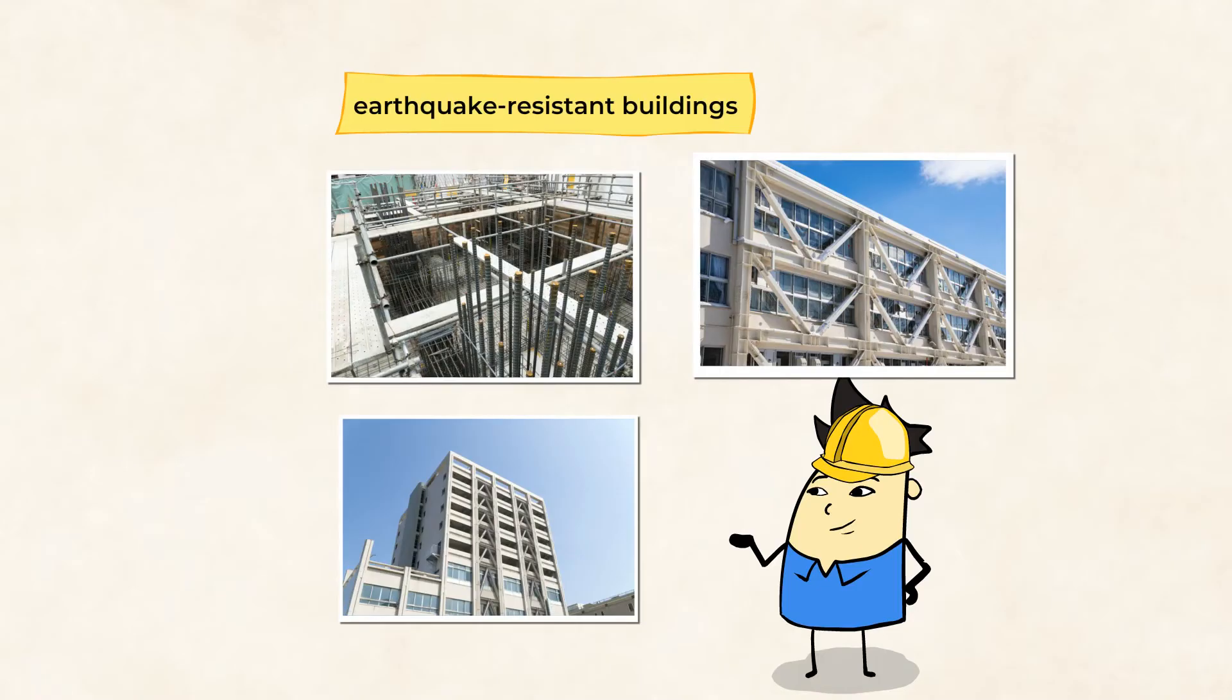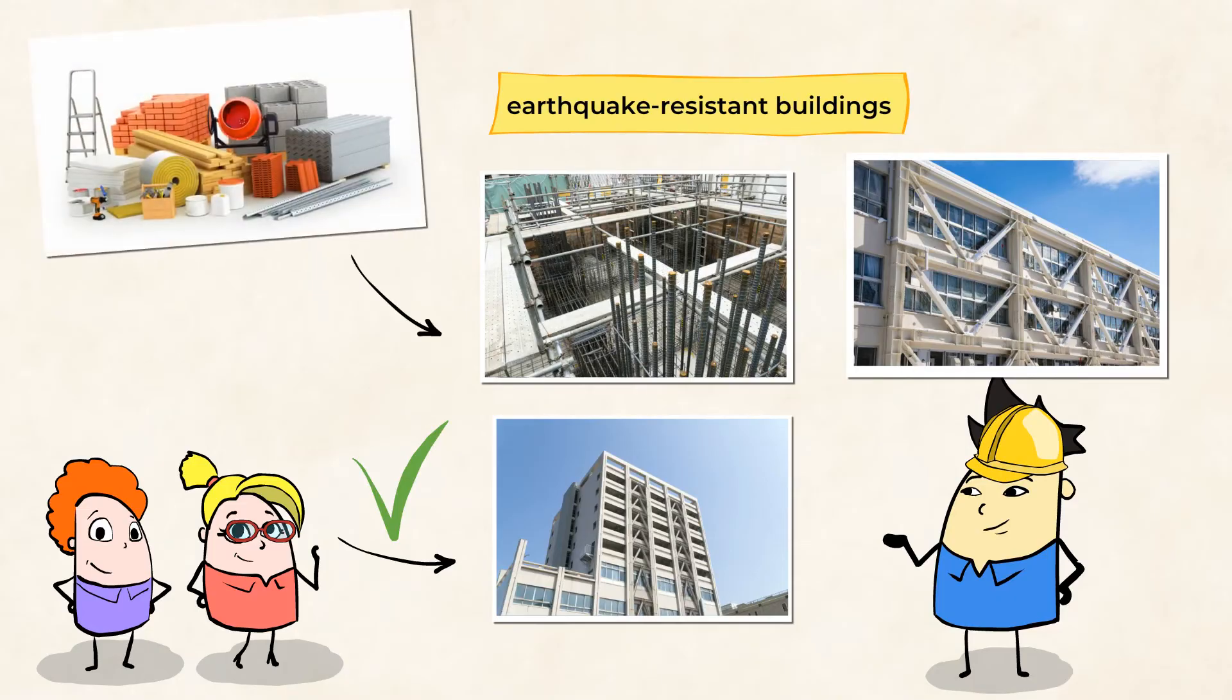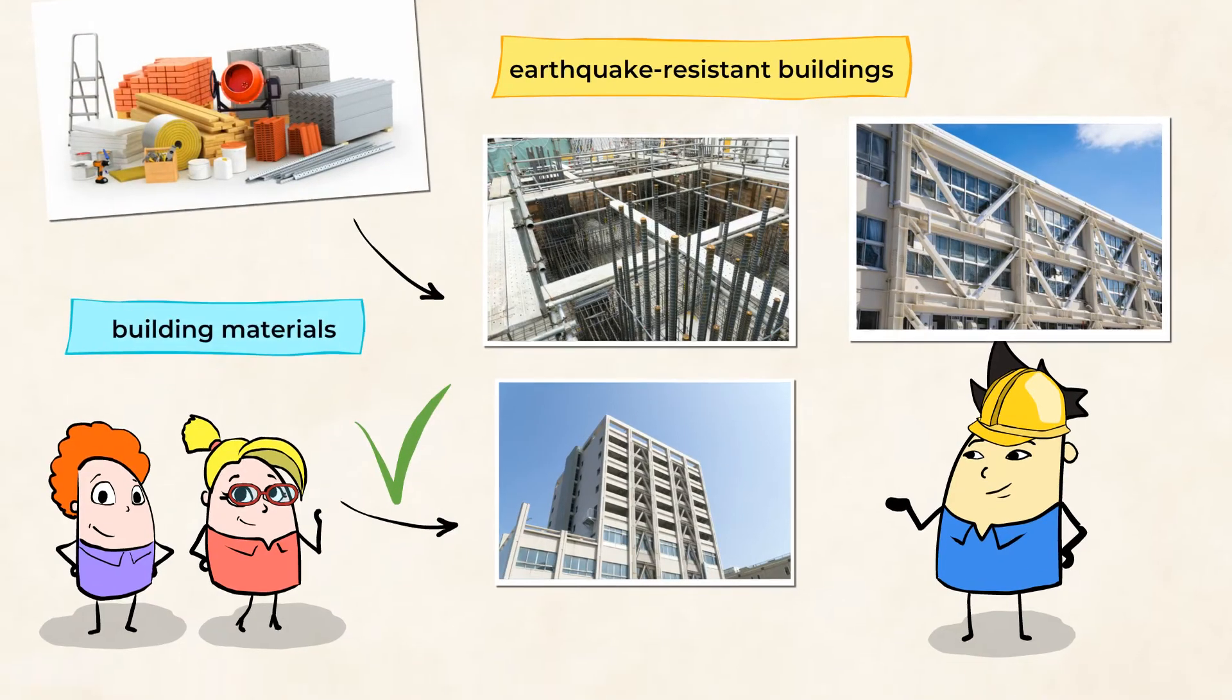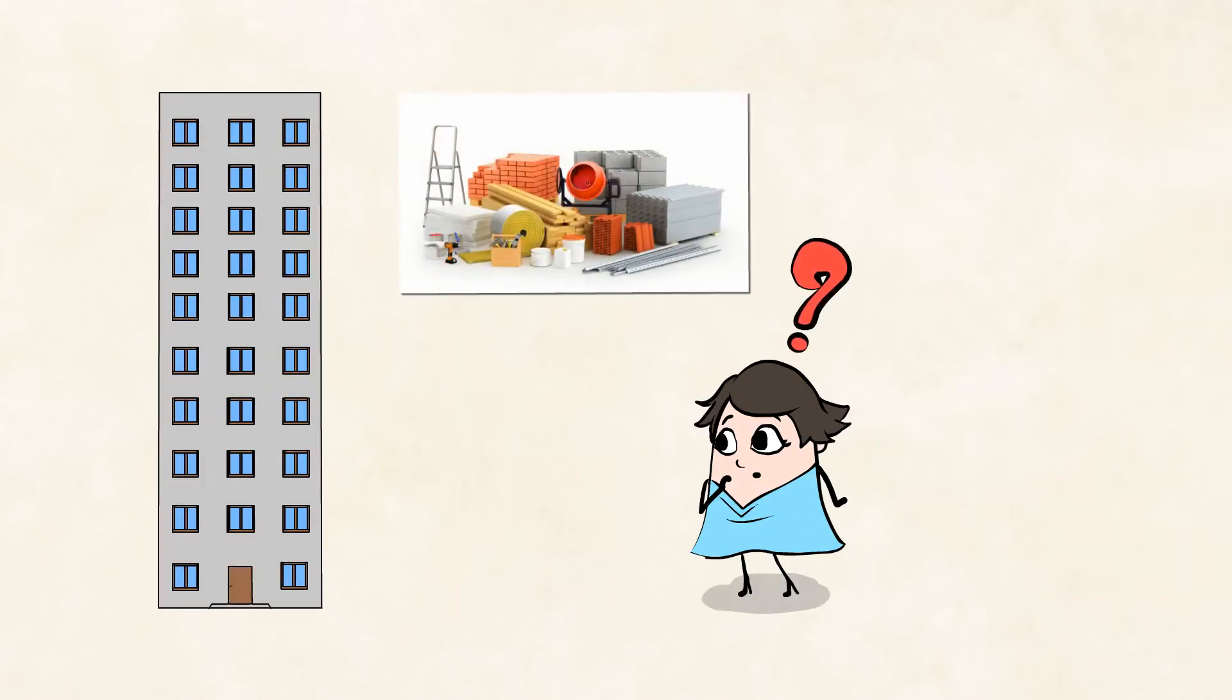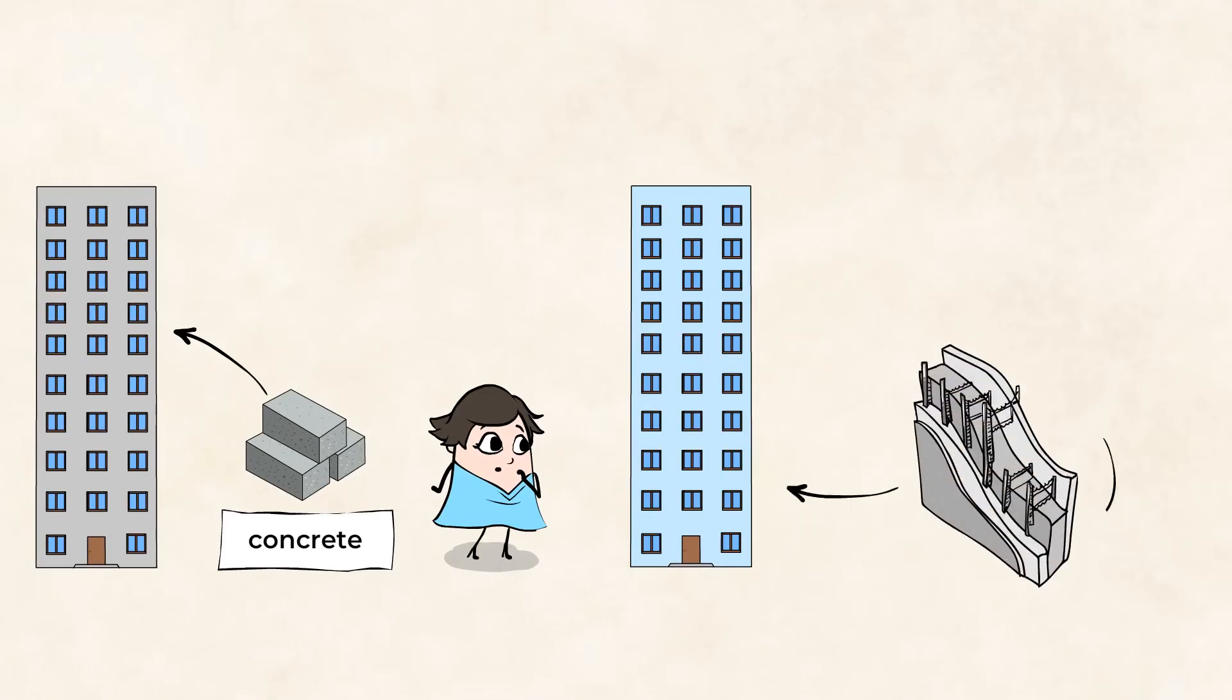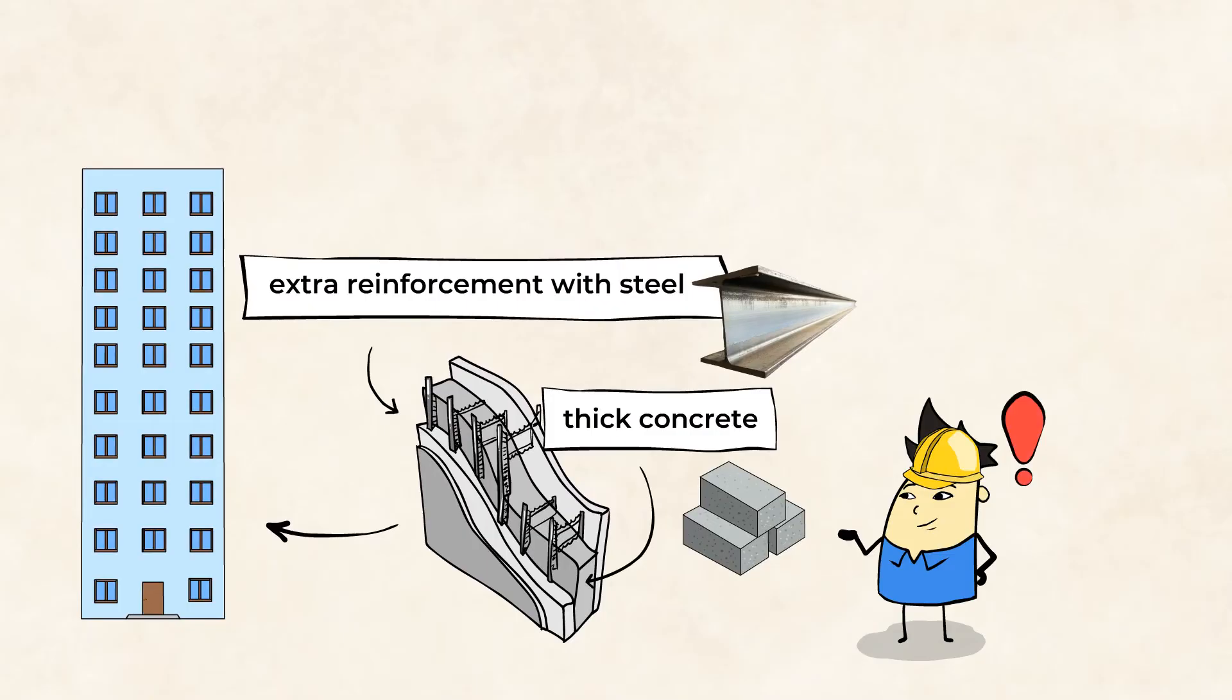These buildings might be damaged by earthquakes, but they will not collapse. This keeps the people inside safe. Engineers do this by using certain building materials when constructing structures. If you were to create a building, what types of materials would you use to make it safer in an earthquake? Would you choose a building made completely of concrete, or one that had its concrete reinforced with steel? Engineers have found that steel-reinforced concrete is much stronger and would hold up better in an earthquake.